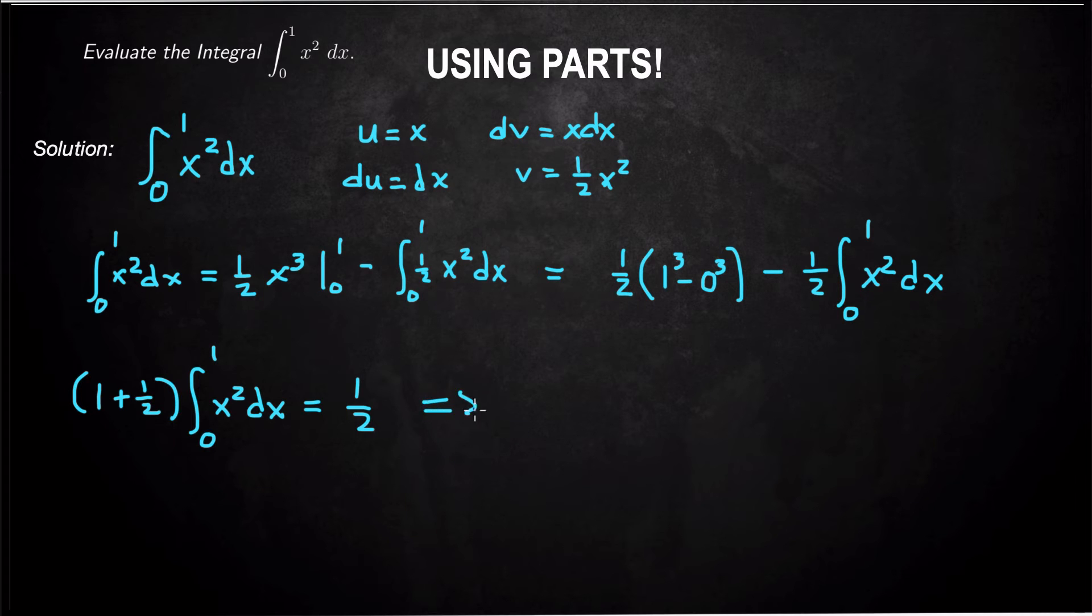So now on the left, we have 3 halves times the integral from 0 to 1 of x squared dx, which is going to be equal to 1 half.